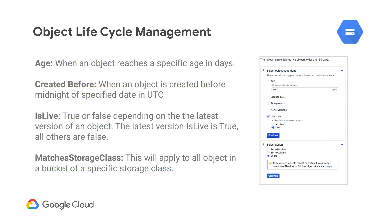The different rules by which you could set these automatic policies are the following: age, created before, is live — which is basically just asking if you have the latest version — and whether it matches a specific storage class. Let's go into the console now and show you how easy this is to set up.